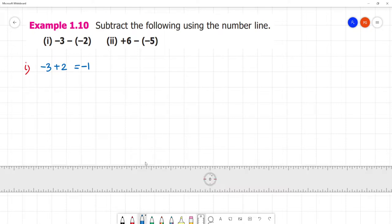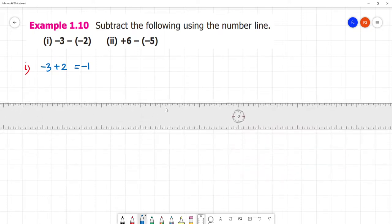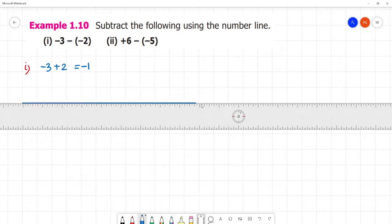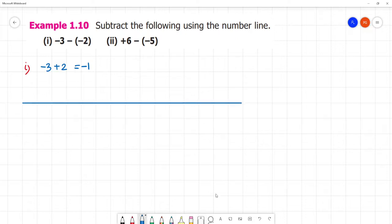By the number line, minus 3 plus 2. The answer is minus 1. Here it is: minus 2, minus 3, minus 4, minus 5. Minus 4, minus 1. 2, 3, 4.